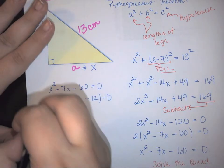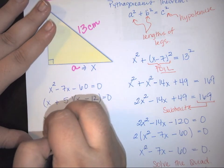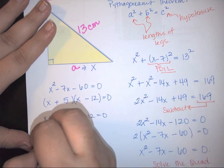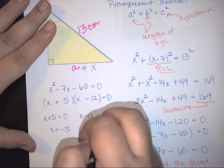And since I have a negative here, your bigger factor has to be negative. So this means positive 5, negative 12. And now I need to solve. x plus 5 equals 0, x minus 12 equals 0. x equals negative 5, x equals 12.